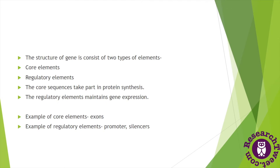The structure of a gene consists of two types of elements. The first are core elements, which have introns and exons in their structure. The other are regulatory elements, found between the core elements. The core sequences have exons — which are DNA coding sequences that take part in protein synthesis — and introns. Regulatory elements consist of several promoters and silencers, which do not code for proteins or polypeptide chains.